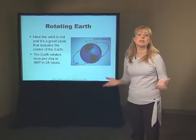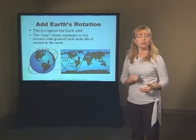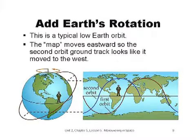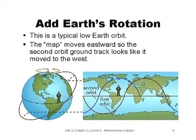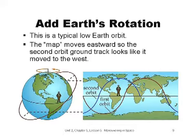Now we can put the concepts we've talked about so far together to see how an orbit's ground track changes over time, primarily due to Earth's rotation. A typical low Earth orbit is shown on the left in red. You can see the rotating Earth and the orbit that the spacecraft follows in red. Ideally, this orbit does not move — it remains stationary in space. On the right, you can see the flat Earth projection and the ground track of the first orbit shown in red. Since the orbit plane remained stationary and the Earth rotated west to east, the second or blue ground track has shifted to the west.